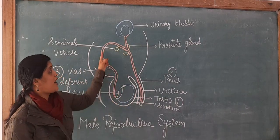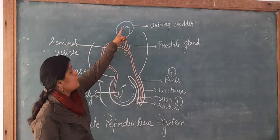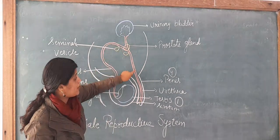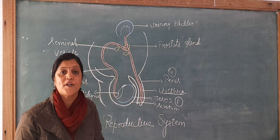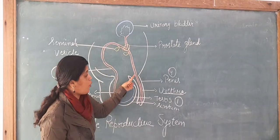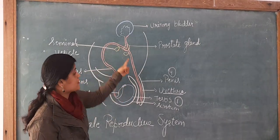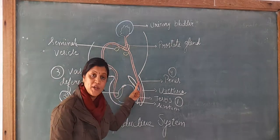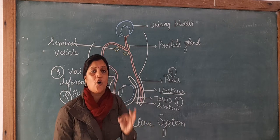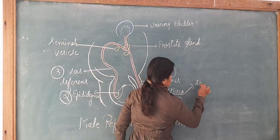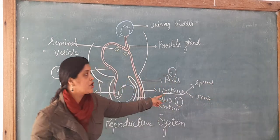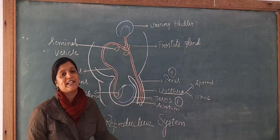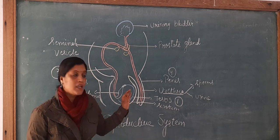The sperms which travel through the vas deferens open into the urethra, and the urine from the urinary bladder also opens into the urethra. Therefore, the urethra is a common passage for both sperms and urine. That is why it is called the urino-genital tract.